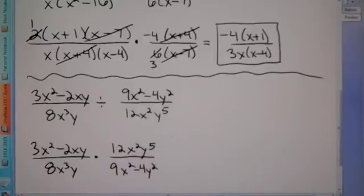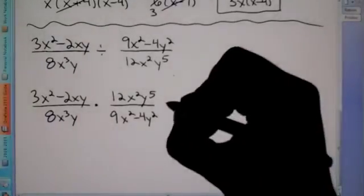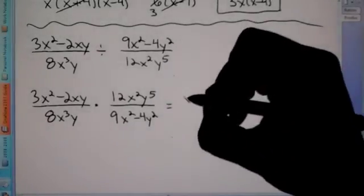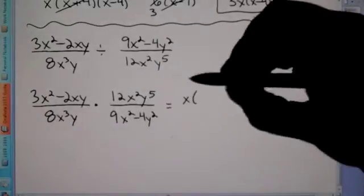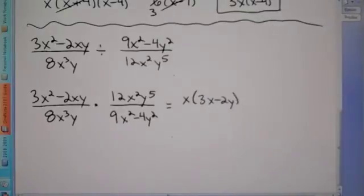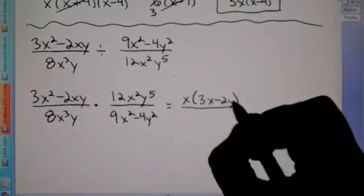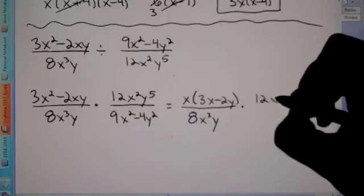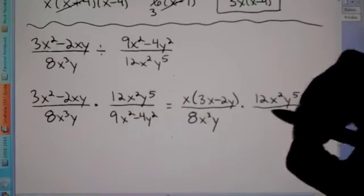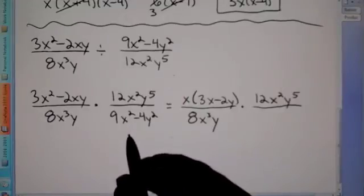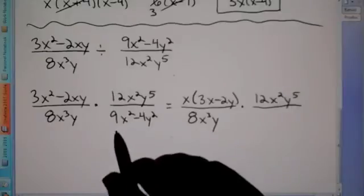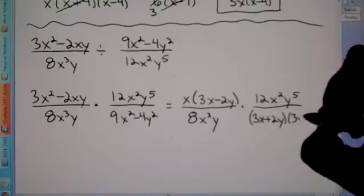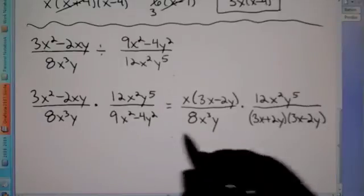So you can change any division problem into a multiplication problem by flipping the right side. Now we go back to the same steps. Can we factor anything on top? It looks like we can factor out an X. If you factor out an X in this numerator, you're left with 3X minus 2Y. You can't factor anything out on the denominator, so let's just rewrite it: 8X cubed Y. And we have times 12X squared Y to the fifth over — here we can actually factor into two parentheses, because we have A squared minus B squared: 9X squared minus 4Y squared becomes 3X plus 2Y times 3X minus 2Y.